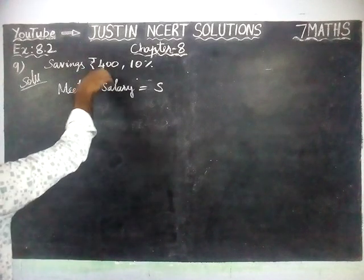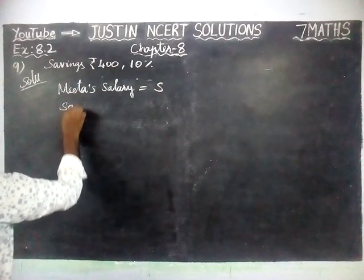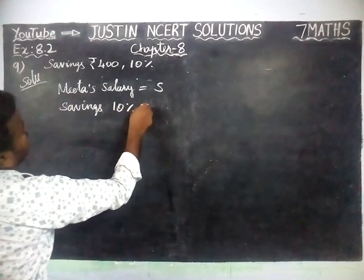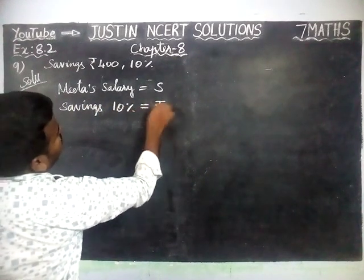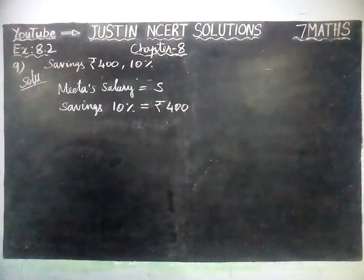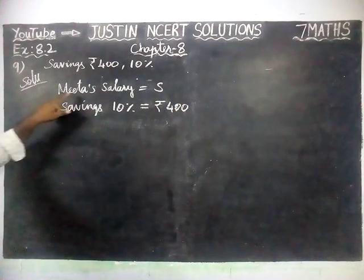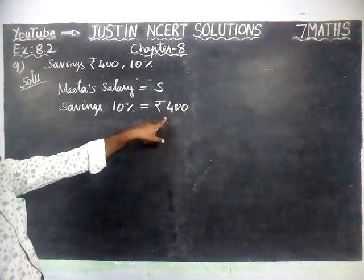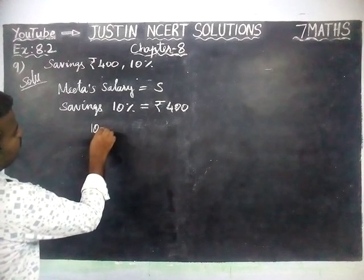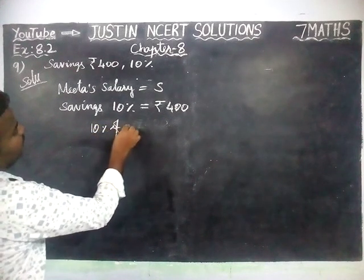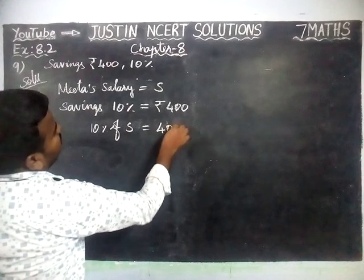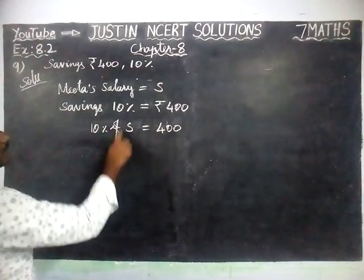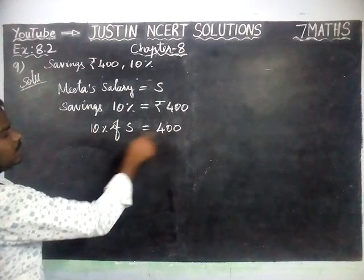Now, Mita's savings amount — savings is 10%, and this 10% is equal to Rs. 400. We have taken Mita's salary as S, and savings 10% is equal to Rs. 400. So, 10% of S is equal to Rs. 400, because her salary is S and 10% of salary is equal to Rs. 400.